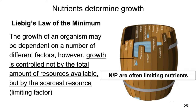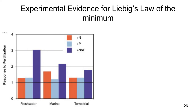Let's look at the results of the experimental evidence for Liebig's Law of the Minimum. This looks at plant growth across a whole bunch of different experimental studies where they manipulated the amount of nitrogen, phosphorus, or nitrogen and phosphorus in different environment types: freshwater, marine, and terrestrial.